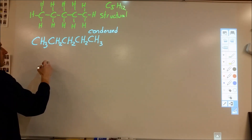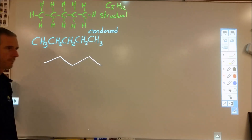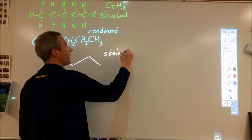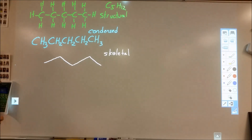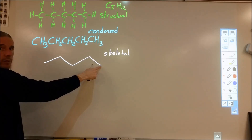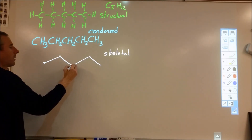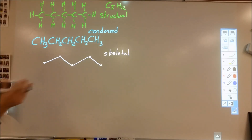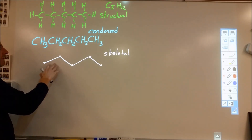Here is another representation — this is called the skeletal structure. Names aren't really important here; the idea is how does this work the same as those others. In this type of representation, any time you see a point where two lines meet or a line ends, that represents a carbon — so this is carbon, carbon, carbon, carbon, and carbon. In a skeletal drawing, you omit all the hydrogens to save time.